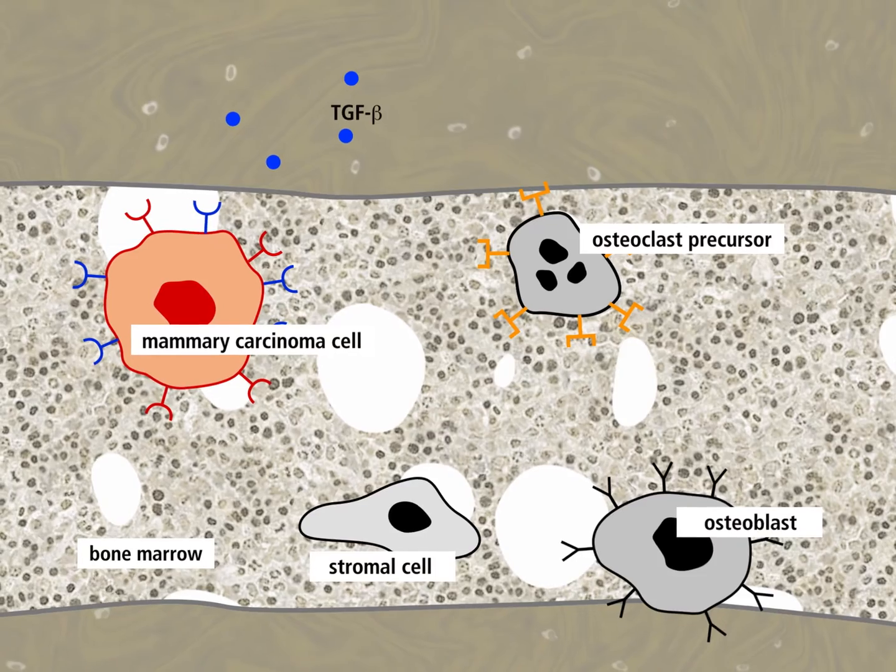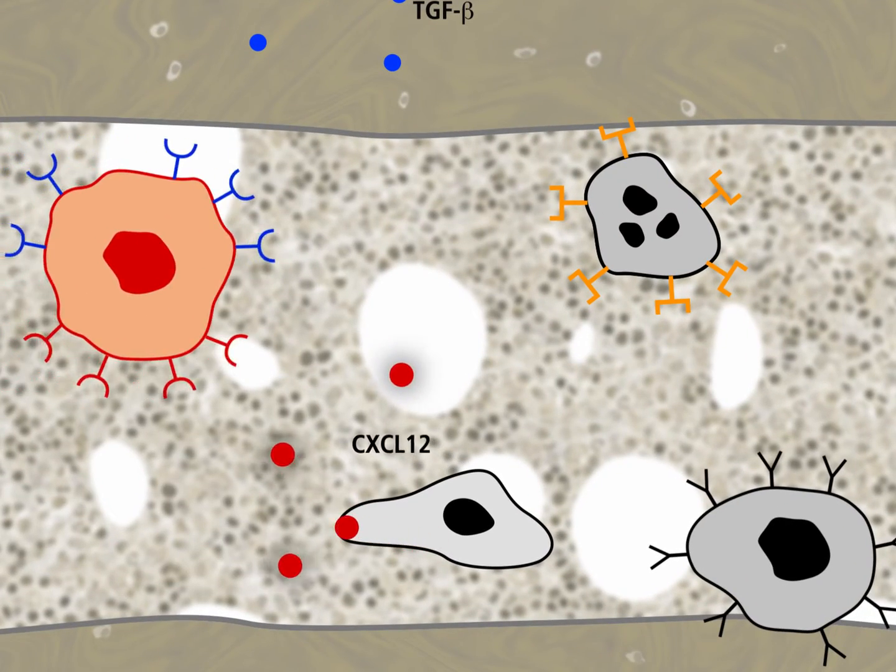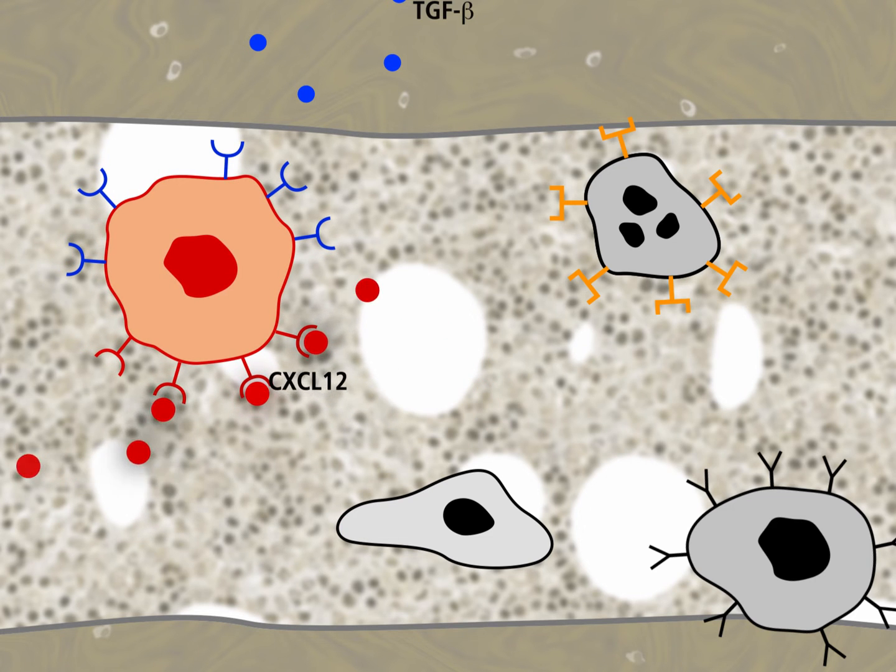Bone marrow stromal cells synthesize the cytokine CXCL12. Mammary carcinoma cells invade the bone marrow along the cytokine gradient. After binding of CXCL12 to receptors of the mammary carcinoma cells, the carcinoma cells secrete interleukin-11.